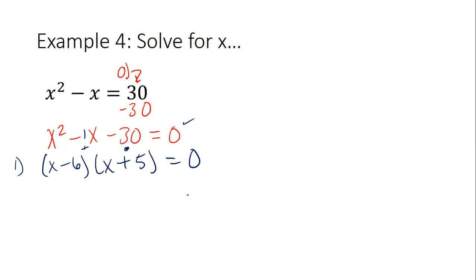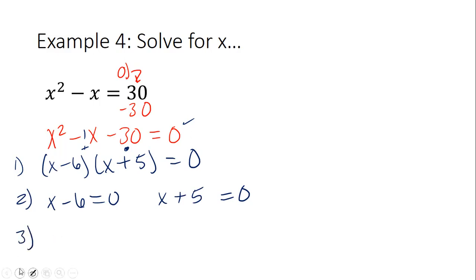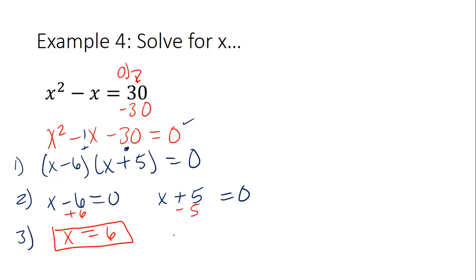Step zero — check. Step one is factoring. Step two: separate and set equal to zero. We separate each factor and set it equal to zero. Step three is to solve for x. We add six, so we get x equals six. The zero product property states that we can set each factor equal to zero and solve for x individually. So then we also get x equals negative five.